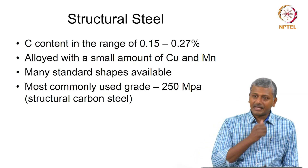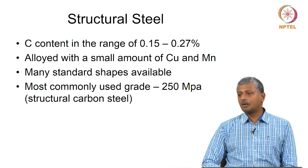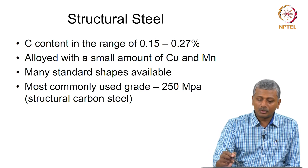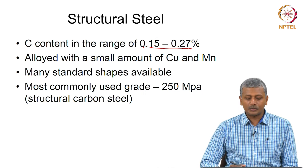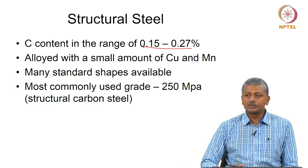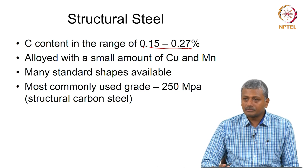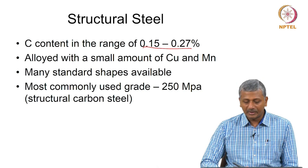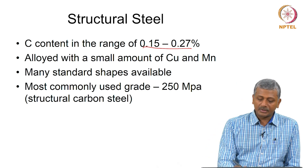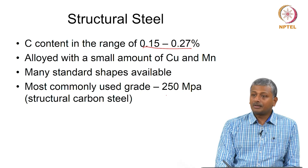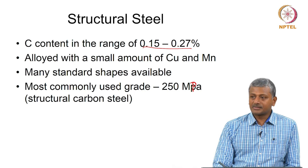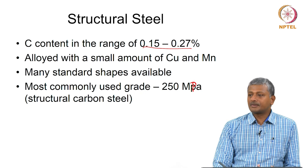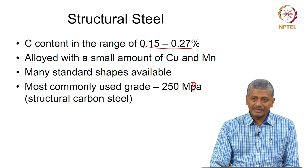Structural steel has very low carbon content — typically less than 0.2%, with a general range of 0.05 to 0.27%. We generally alloy it with small amounts of copper and manganese to introduce a little bit higher corrosion resistance. Several standard shapes are used: I-shape, H, channel, angle — all used for different types of steel frames. The most commonly used grade is 250 megapascals yield strength, which is structural carbon steel, otherwise known as mild steel.